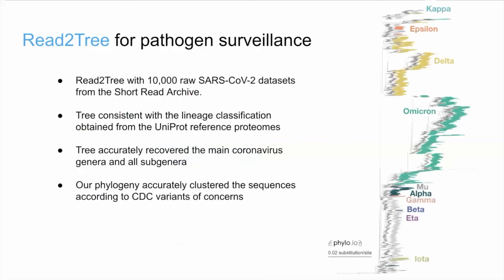Finally, you might wonder why you'd apply such a tool. In the paper we show several applications. Specifically, we show one application for the recent COVID outbreak. We applied it to 10,000 raw SARS-CoV-2 datasets for strains, and we are capable of placing the different sequences into the correct CDC variants that were recognized. We also accurately recovered the main coronavirus genera and all its subgenera, and you can see all the different strains. It's extremely simple to use and produces a tree like this in a very short amount of time.